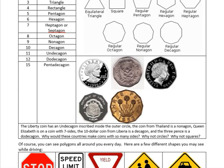The ten-dollar coin from Liberia is a decagon — I like that, ten sides for ten dollars. And this three pence is a dodecagon, with twelve different sides.